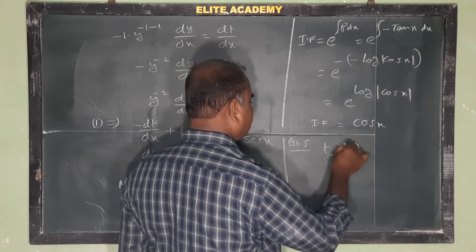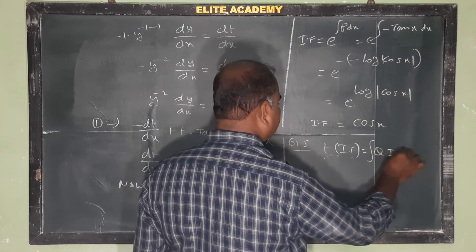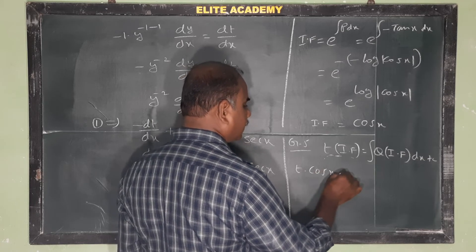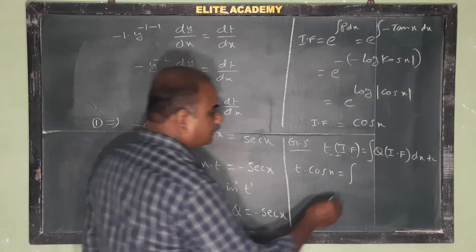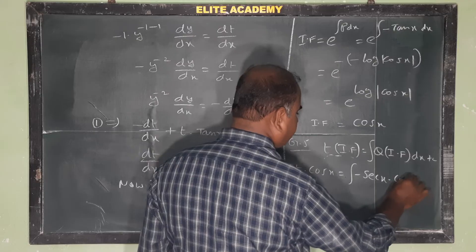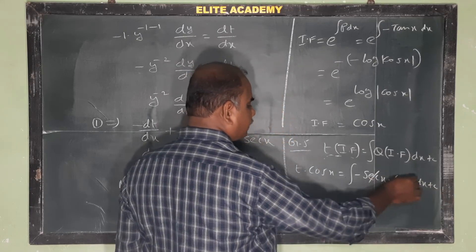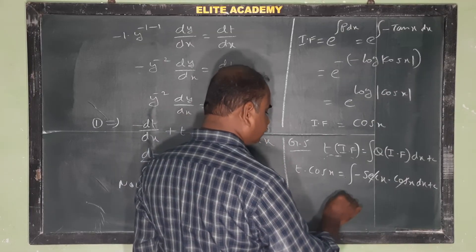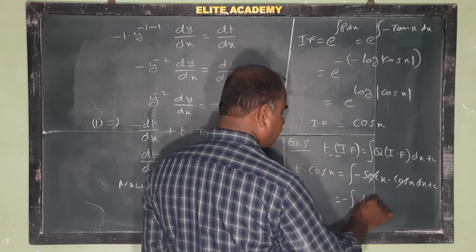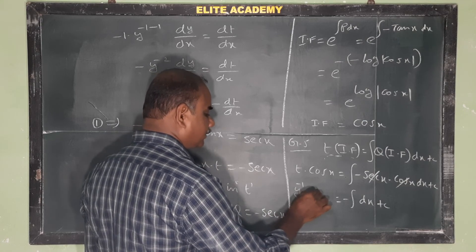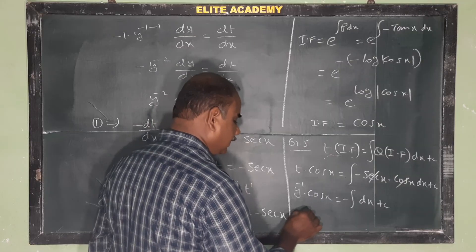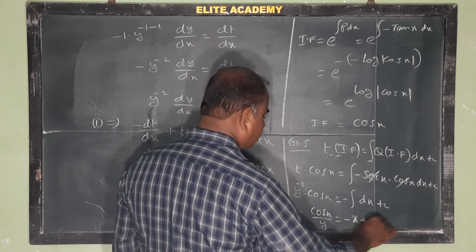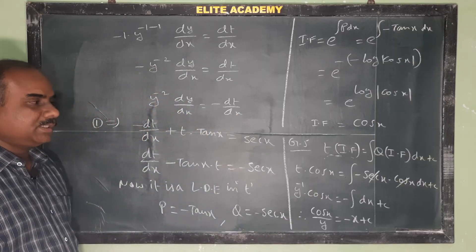General solution: t·IF = ∫Q·IF dx + C. So t·cos(x) = ∫(-sec(x))·cos(x) dx + C. Since sec(x) and cos(x) are reciprocals they cancel, giving -∫dx + C = -x + C. Since t = y^(-1) = 1/y, the general solution is cos(x)/y = -x + C.